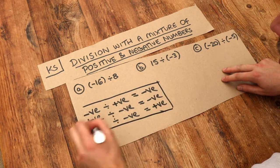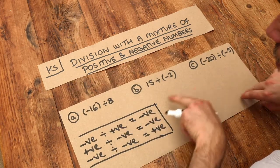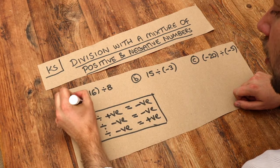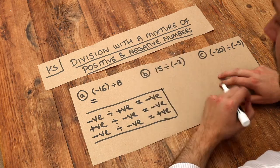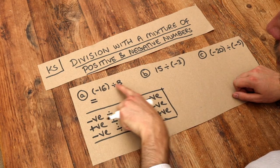So without further ado, let's do these three examples. Minus 16 divided by 8. Well, let's worry about the sign first. And by sign, I mean whether it's positive or negative. We've got negative divided by positive.